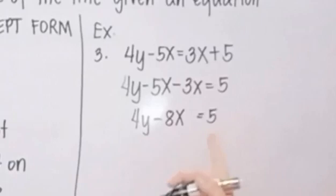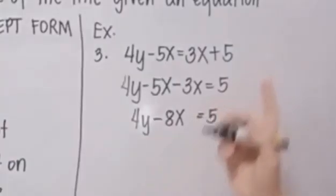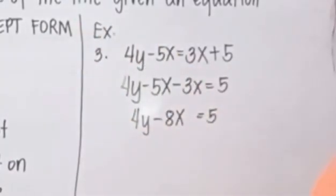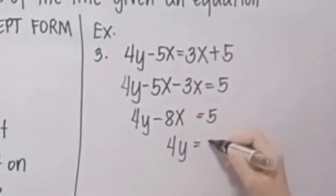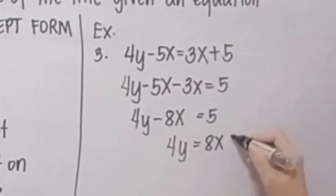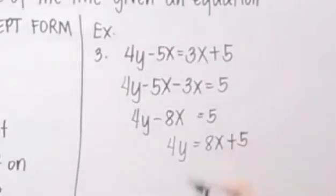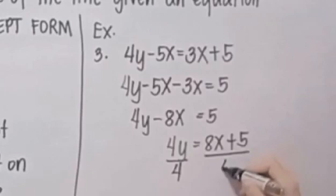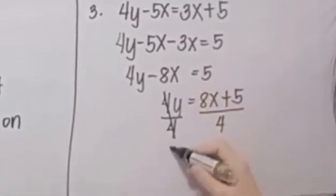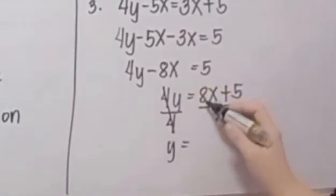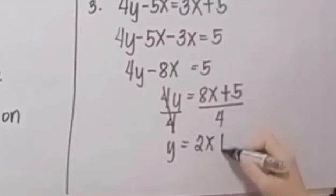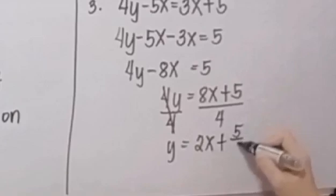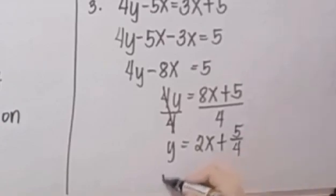This becomes 4Y minus 8X is equal to 5. It's not yet in standard form, but we can change it to slope-intercept form: 4Y is equal to 8X plus 5. Dividing by 4, Y is equal to 2X plus five-fourths. So our slope is 2.